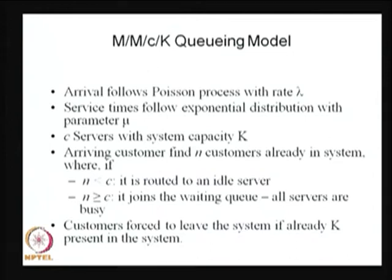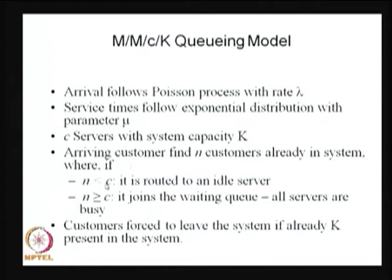Now I am moving into the M/M/C/K queuing model. Here the change is instead of one server in the M/M/1 model, you have more than one server C, and you have a finite capacity that is capital K. The arrival follows the Poisson process, service is exponential, we have C identical servers, and the capacity is capital K. Whenever the system size is less than C, it will be routed to an idle server. If it is greater than or equal to C, that means all servers are busy and the customer has to wait.